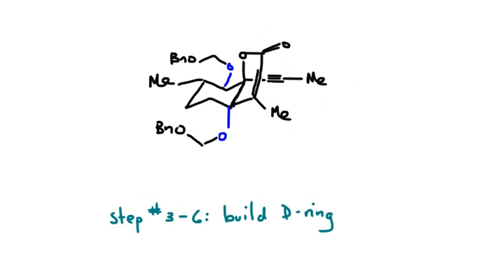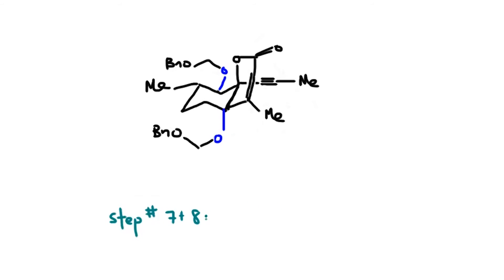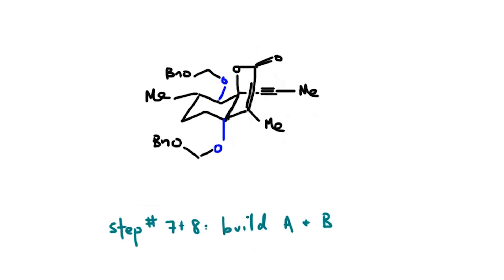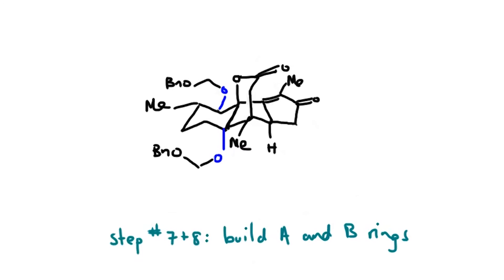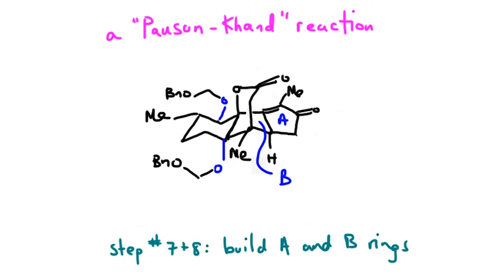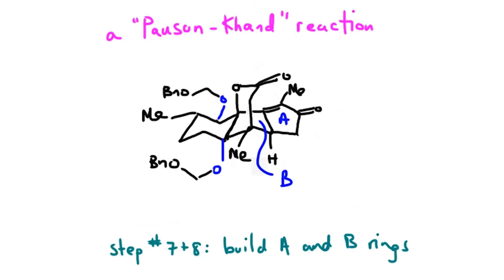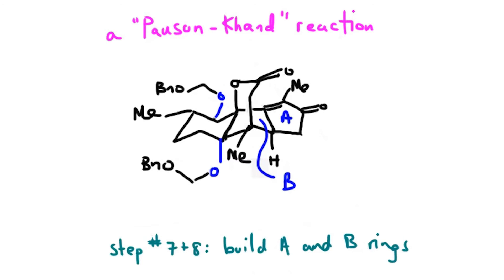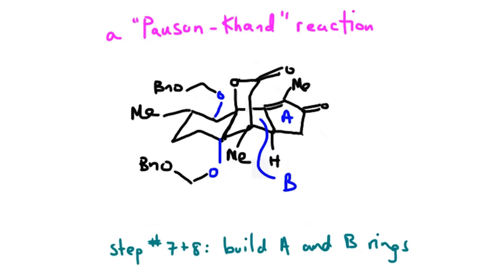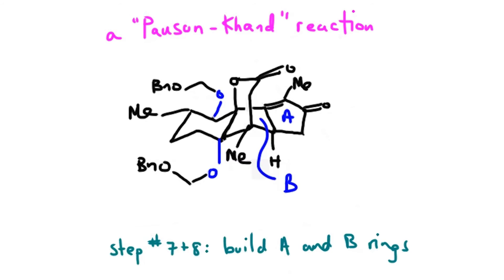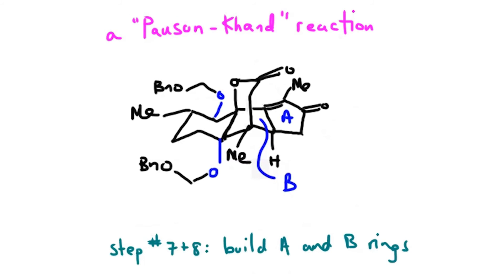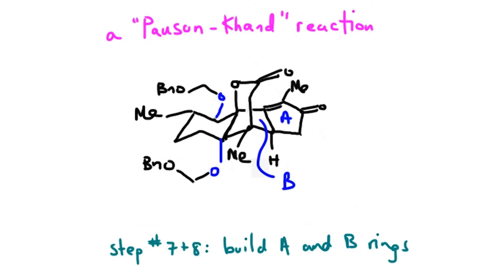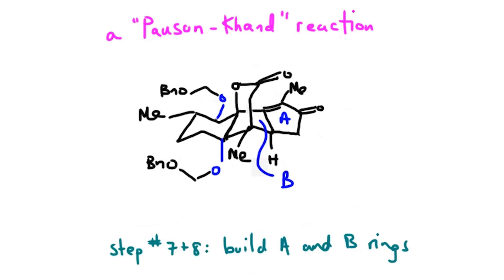At this stage, we continue to build the carbon skeleton. We add another two-carbon fragment and we're set up for one of the key steps in the synthesis: a reaction known as the Pauson-Khand reaction. This allows us to cyclize the alkene with the alkyne with the incorporation of a molecule of carbon monoxide. That gives us both the A and B rings of ryanodol, completing four out of five rings within the molecule. Now we have most of the carbons needed and just have to work on refunctionalizing the A ring.